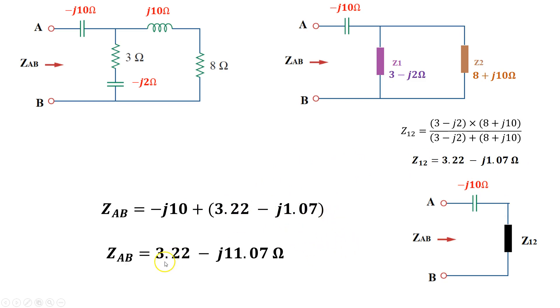Which is basically 3.22 - j11.07 ohms. That's the overall impedance seen from the source or from the terminal AB.